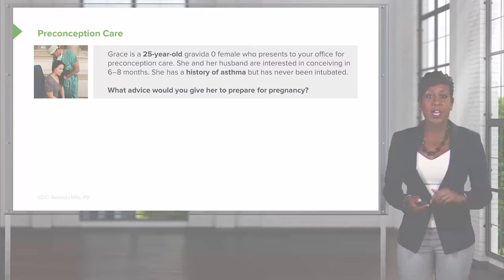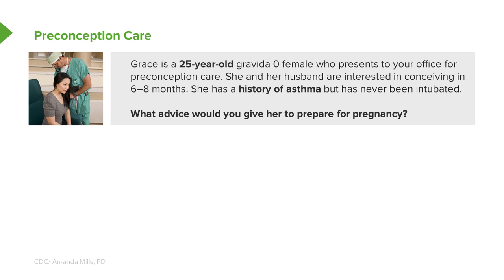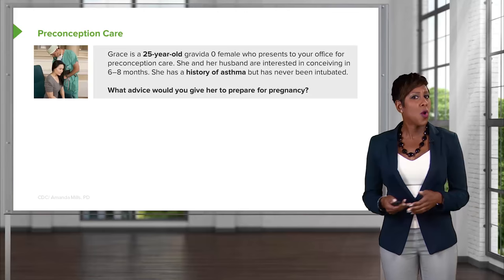Let's go through a case. Grace is a 25-year-old Gravida Zero female who presents to your office for preconception care. She and her husband are interested in conceiving in six to eight months. She has a history of asthma but has never been intubated. What advice would you give this patient to prepare for pregnancy?